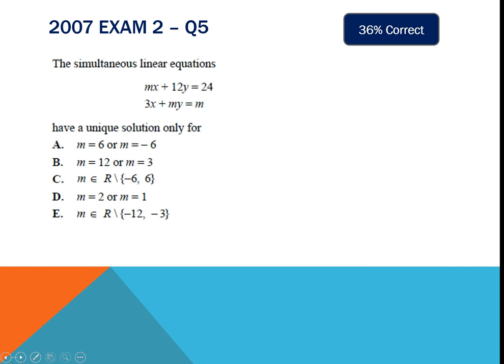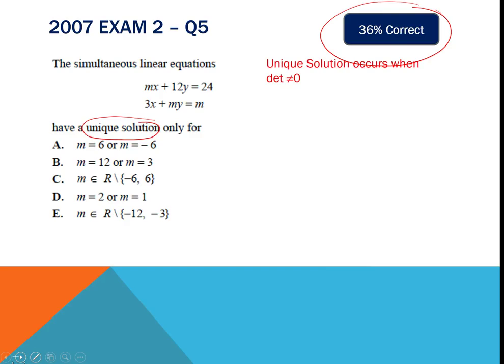This question is from 2007 and you'll notice the huge amount of students that got it wrong — only 36% that particular year got it right. The key word when you read this question is 'unique solution.' When you see 'unique solution,' and even words like 'infinite solutions' or 'no solutions,' that's a reminder you're working with matrix format and finding the determinant. A unique solution occurs when the determinant is not equal to zero.